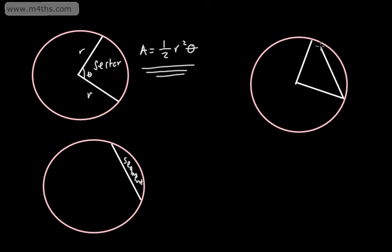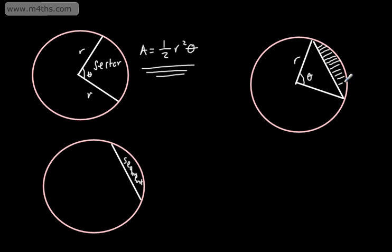The line then comes across here. So if we put on that this angle is going to be theta and this is going to be r, and we want this shaded region, then if we can find the area of the sector and subtract away the area of a triangle, that will give us the area of a segment.